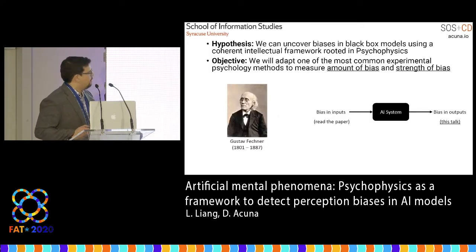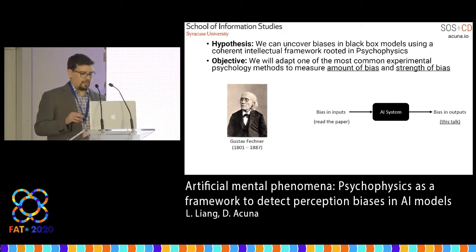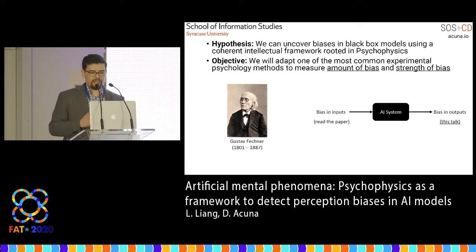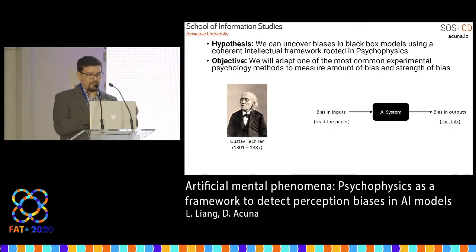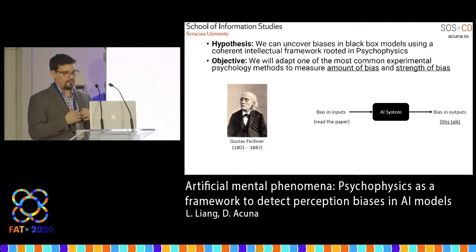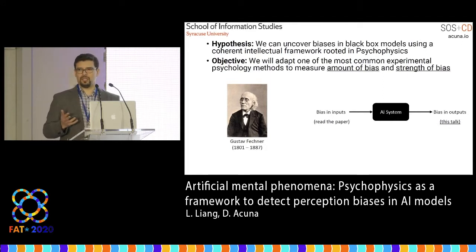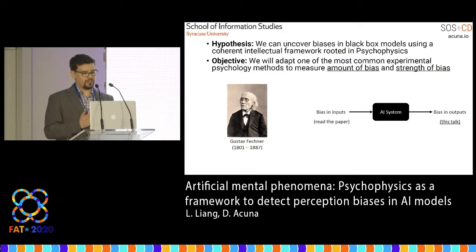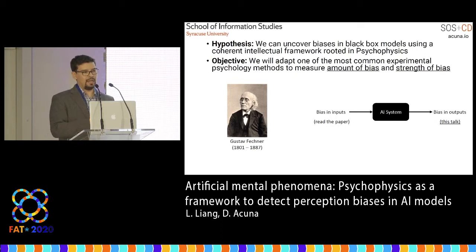The hypothesis of this work is that we can take ideas from psychophysics — a field in experimental psychology almost 100 years old — and adapt them to measure biases. Specifically, we use perhaps the most common experimental psychology technique: the two alternative force choice task, to measure the amount of social bias in a decision and the strength of that bias.